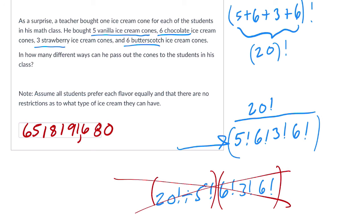And we've got, wow, 6,518,191,680. A lot of ways to arrange those identical ice cream cones, and that's taking into account that so many of them look identical to each other and dividing them out. So it's quite a big number. All right, I hope you enjoyed.